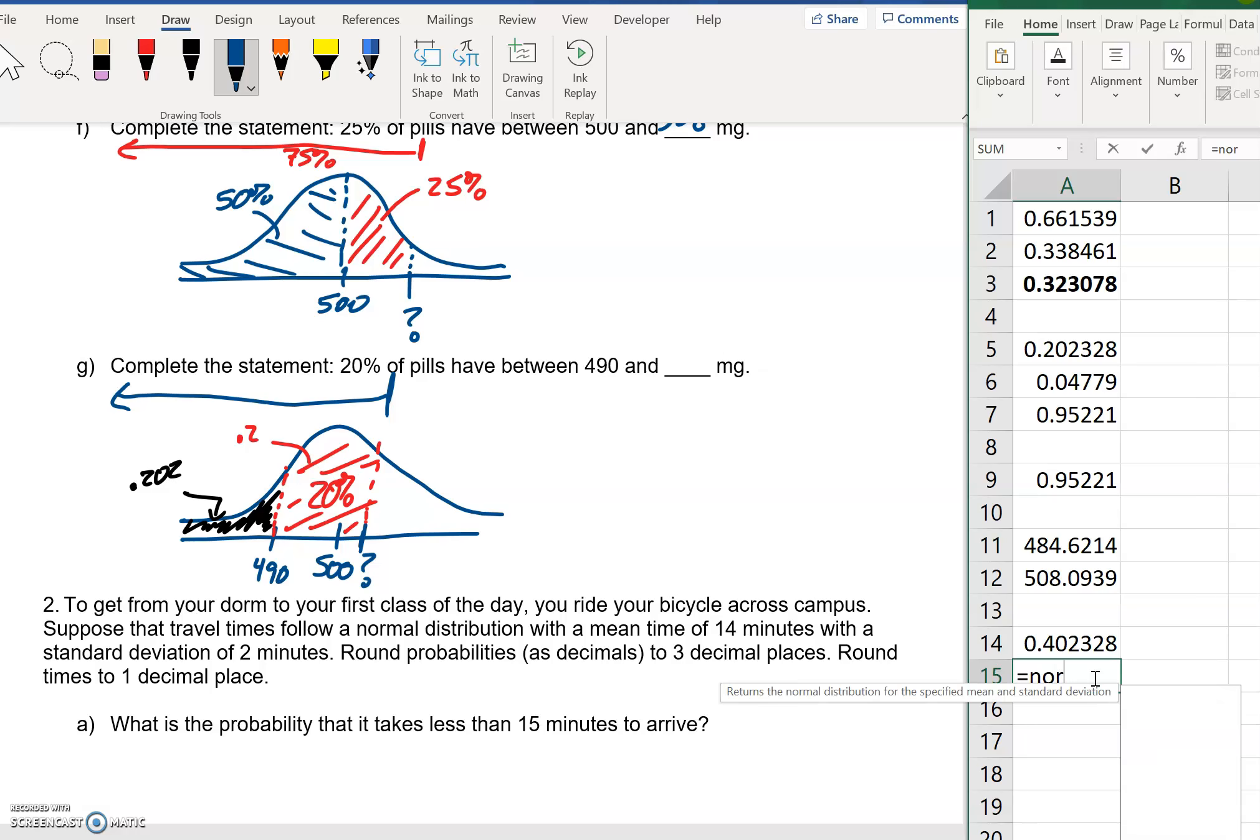Now I can use inverse norm, norm.inv, and say I have this area. I can just click on that area, mean of 500, standard deviation of 12, and it's going to tell me your value is 497 and a little bit of change. So our mystery value here is 497, which is actually below that mean, as we suspected it might be.